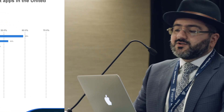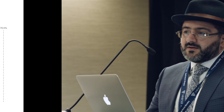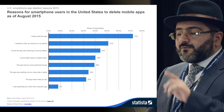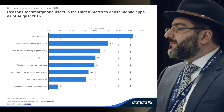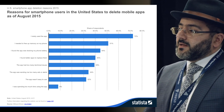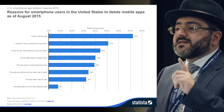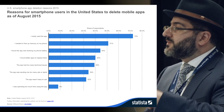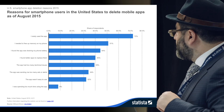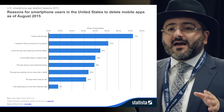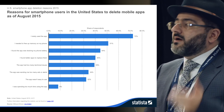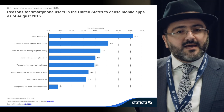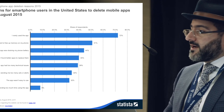The reason for smartphone users in the United States to delete mobile apps as of August 2015 is a crucial stat: 40% of people will switch to a better app if they find one. So you have a potential 40% of close to a billion iOS users who will potentially switch to the iShook app over their current reading app if they feel iShook is better.